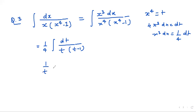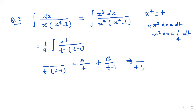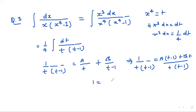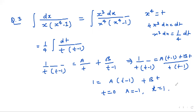We use partial fractions. We write 1 upon t times t minus 1 equals a upon t plus b upon t minus 1. Simplifying: 1 equals a times t minus 1 plus b times t. Taking t equals 0, a equals minus 1. Taking t equals 1, b equals 1. So 1 upon t times t minus 1 equals minus 1 upon t plus 1 upon t minus 1.